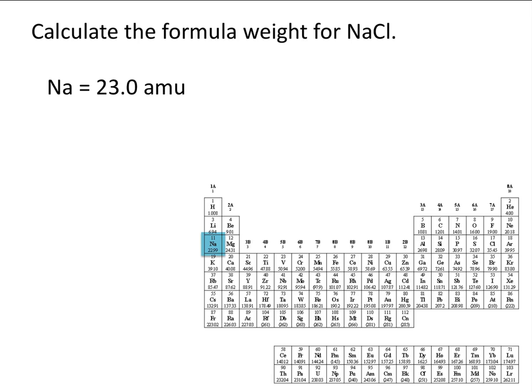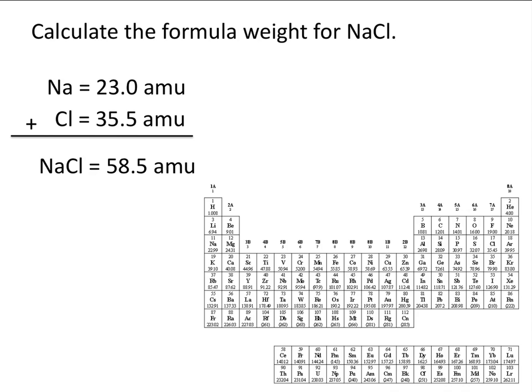Remember, there are two numbers on your periodic table. The top number refers to the atomic number, or the number of protons in an atom of that given element — that's not the number we want to use when calculating formula or molecular weights. We want to use the bottom number, which is the average atomic mass. When we look up the atomic mass of chlorine, we see that it is 35.5 AMU. Because the formula for NaCl contains only one atom of sodium and one atom of chlorine, we can simply add the atomic weights to give us a formula weight of 58.5 AMU for sodium chloride.